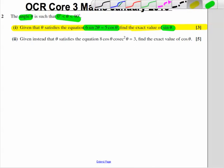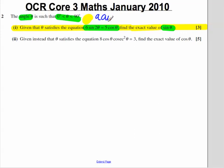So theta is an acute angle. Given that theta satisfies the equation 6 sine 2 theta equals 5 cos theta, find the exact value of sine theta.